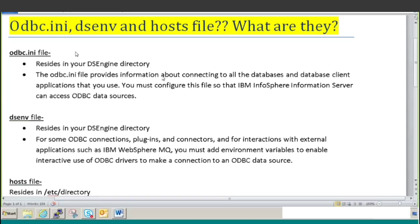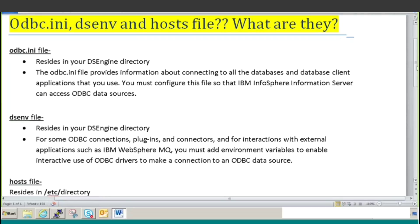So as explained in an earlier video, the odbc.ini file has ODBC connections, and as already explained in an earlier video, how to connect to Oracle sources. Here you need to define that Oracle home directory and everything, in case you want to make sure that you are connecting properly to that Oracle source. I will open this file and show you what is there.